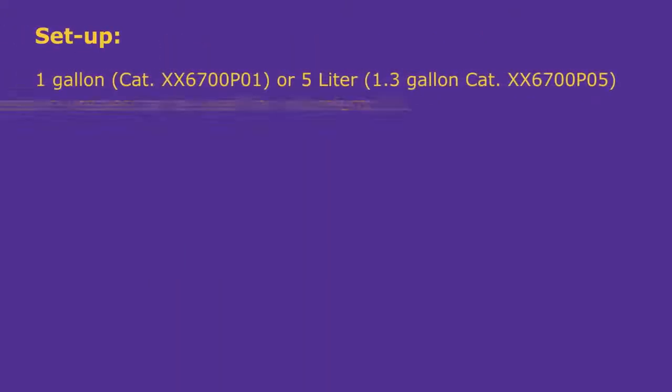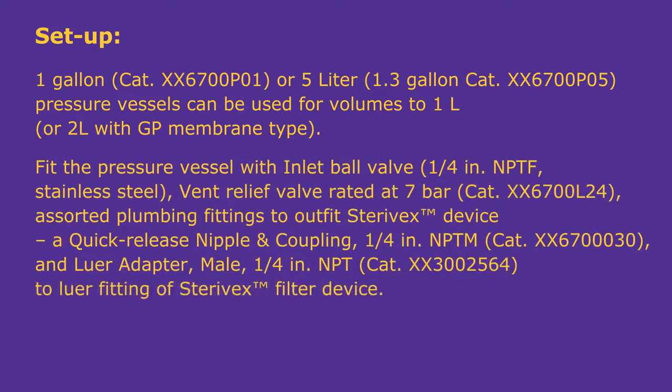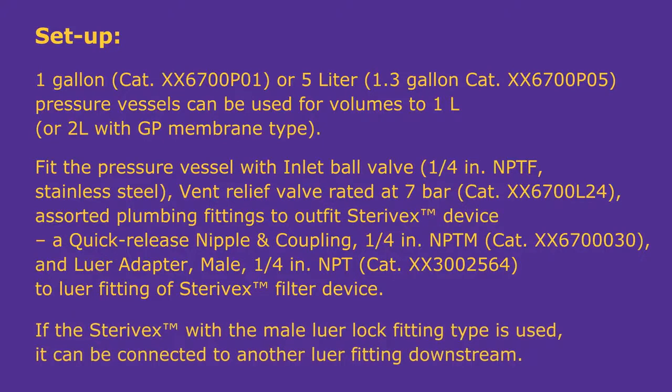Setup. 1 gallon or 5 liter can be used for volumes up to 1 liter. Fit the pressure vessel with inlet ball valve, vent relief valve rated at 7 bar, assorted plumbing fittings to outfit Sterivex device, a quick release nipple and coupling, 1 quarter inch NPTM and lure adapter male 1 quarter inch NPT to lure fitting of Sterivex filter device. If the Sterivex with male lure lock fitting type is used, it can be connected to another lure fitting downstream.